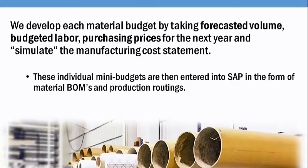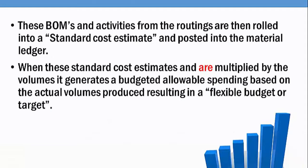The key here is for manufacturing companies that use SAP. We've entered the expected cost per unit in the form of material, bill of materials, and production routings. We costed each one and we posted it in the Material Master. When these standard cost estimates are multiplied by the volumes, it generates a budget — allowable spending based on actual volumes produced — resulting in the flexible budget, or the target, that we can now report on.